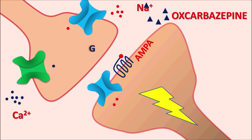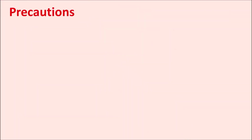Oxcarbazepine does not affect the glutamate pathway directly. Instead, it blocks the voltage-gated sodium channels that are mainly responsible for excitation of pre-synaptic neurons. When these channels are blocked, pre-synaptic neurons are inhibited, calcium-mediated exocytosis is inhibited, and neurotransmitters are not released, resulting in decreased neuronal excitation and inhibition of excessive neurotransmission within the CNS.